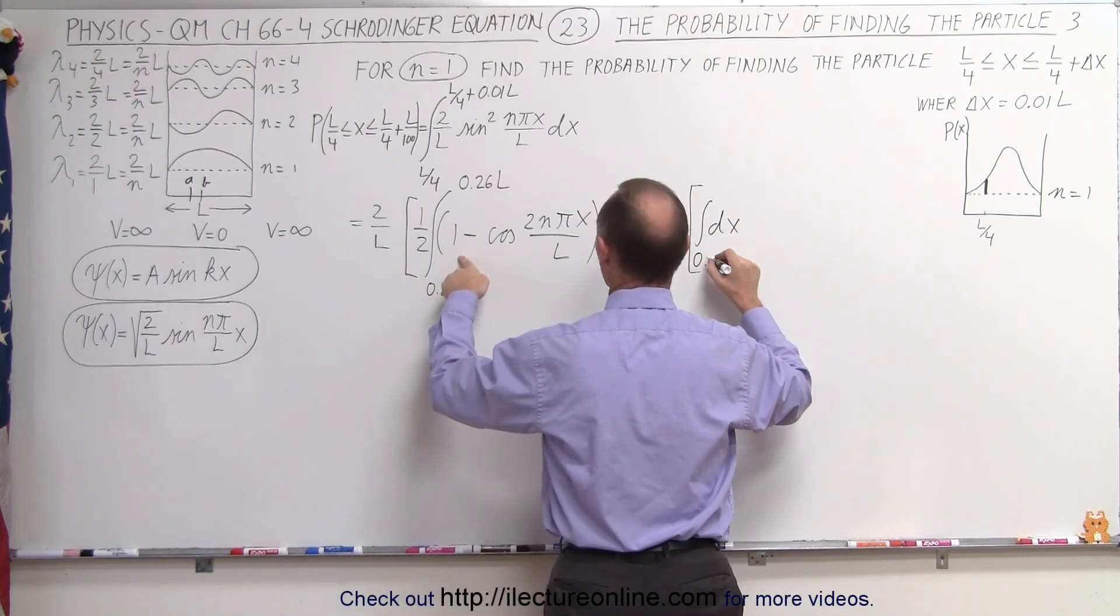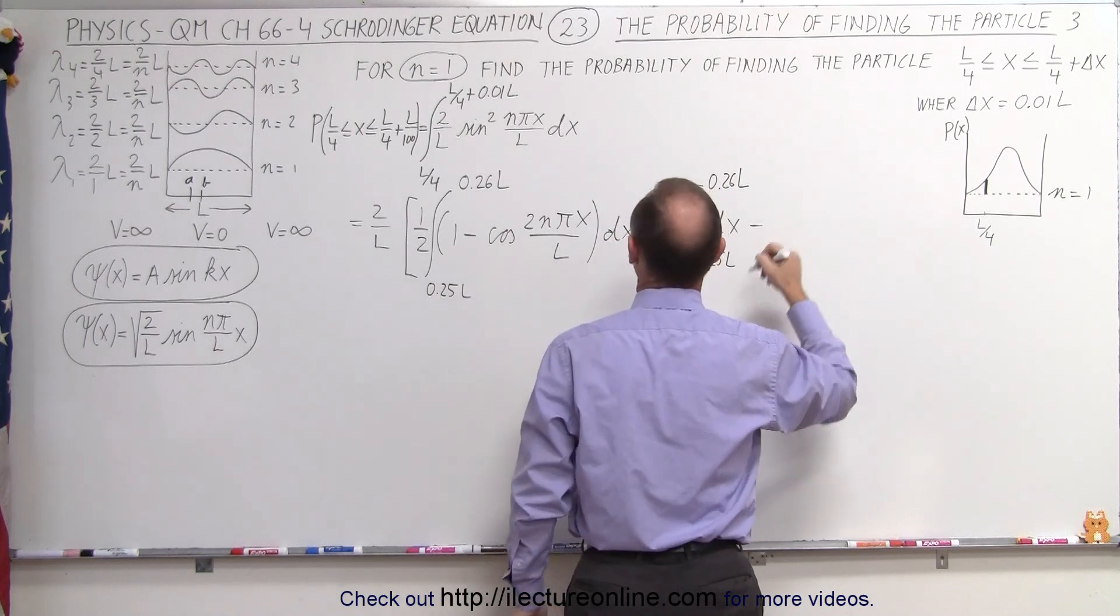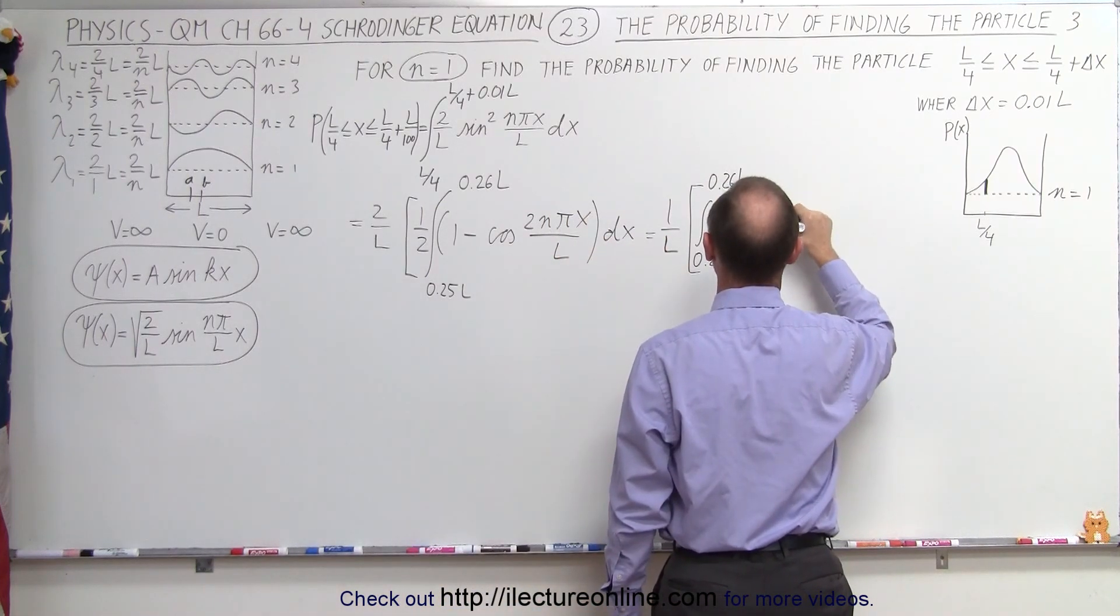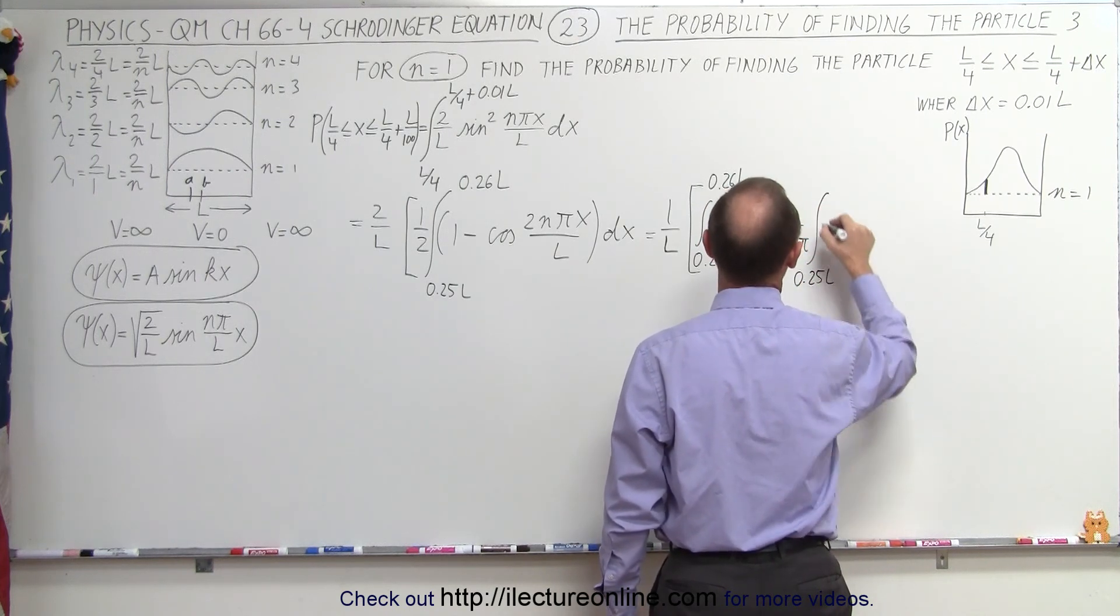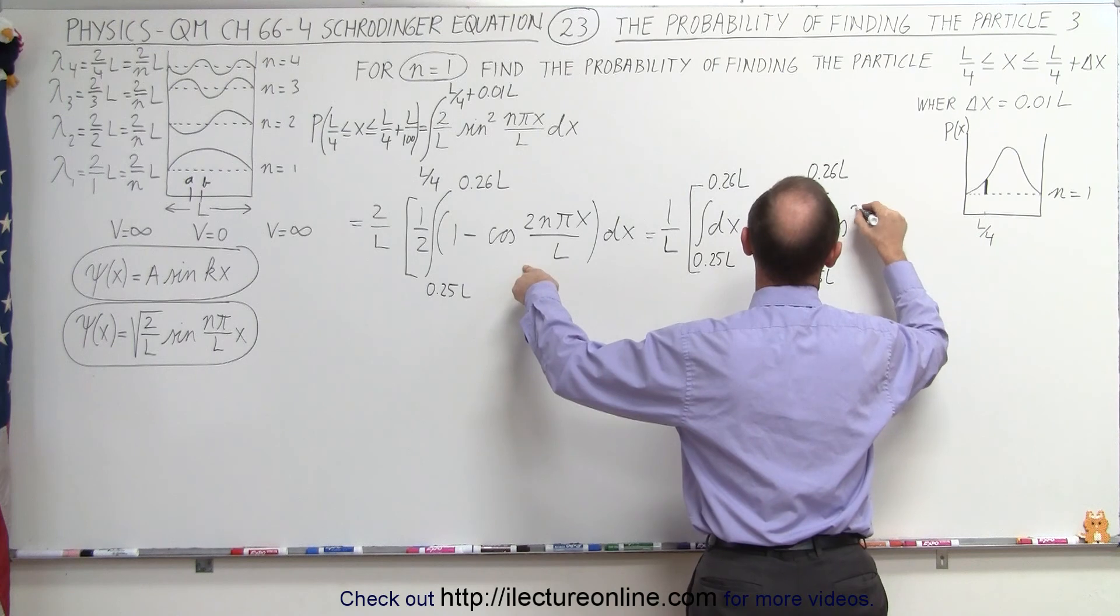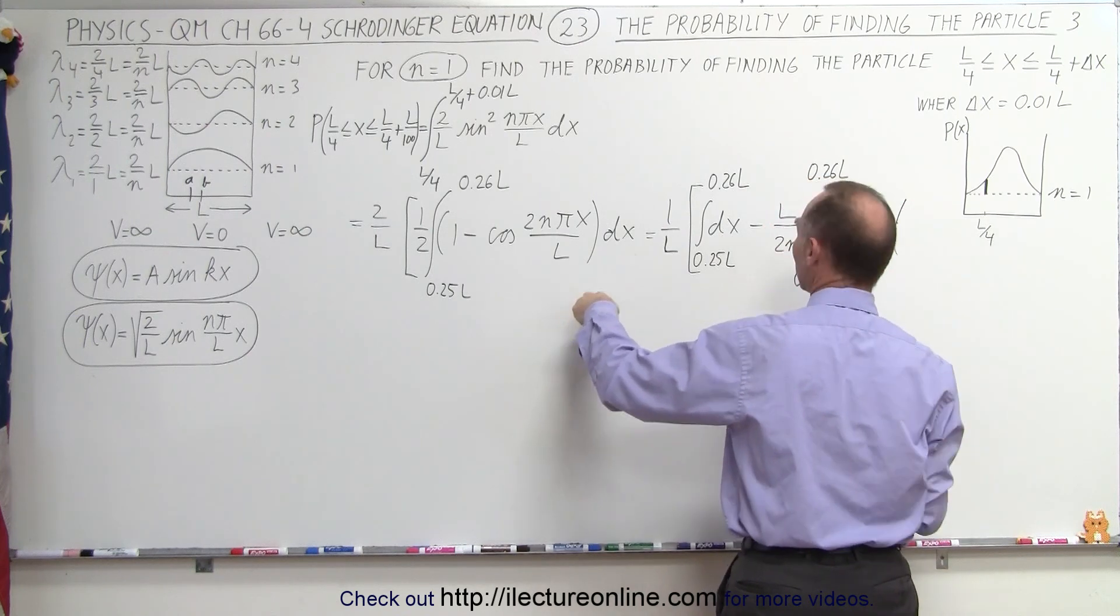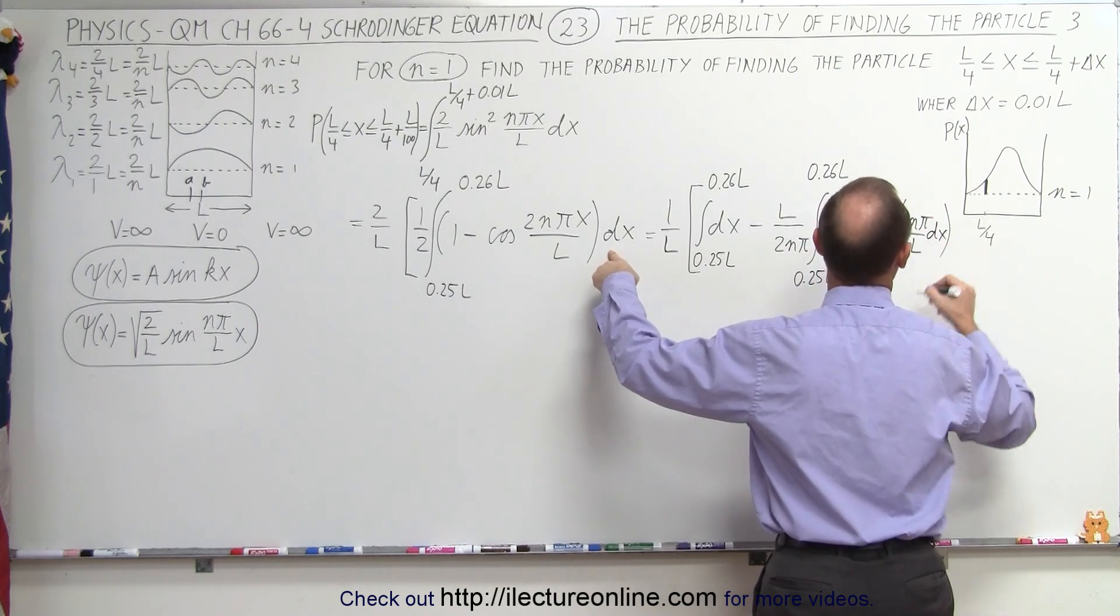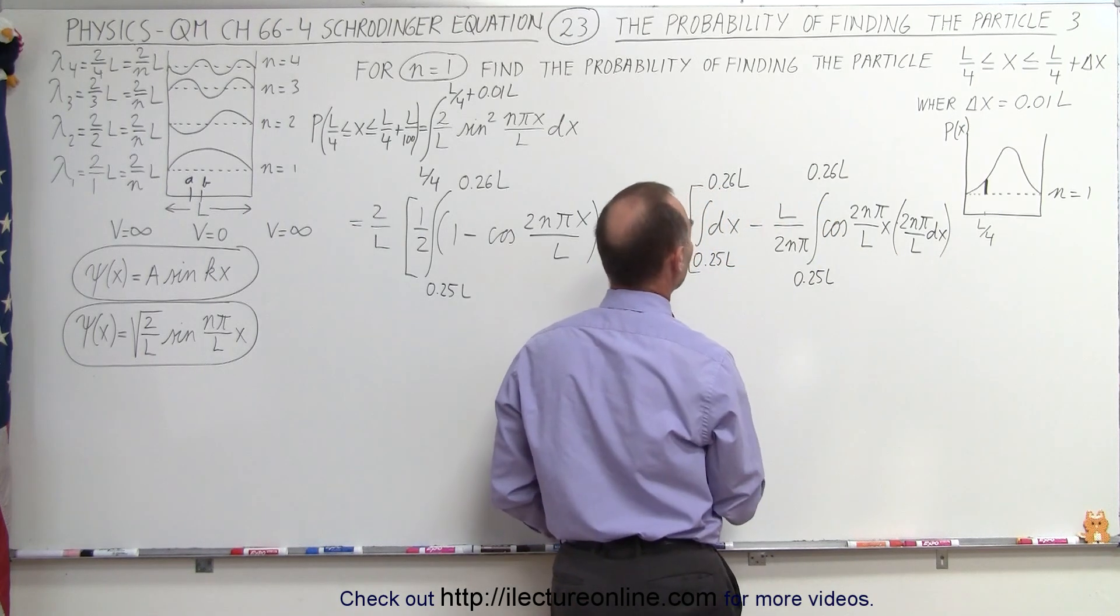And then minus, now here when we integrate that, we need the proper differential. So we're going to need to multiply times L over 2n pi times the integral from 0.25L to 0.26L of the cosine of 2n pi over Lx dx. Instead of dx, we're going to need the proper differential, which is going to be 2n pi over L times dx. So this now becomes the proper differential of this integral. That's why we needed this constant here. And we need to close the brackets.